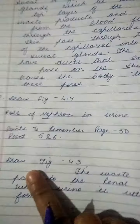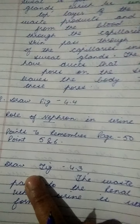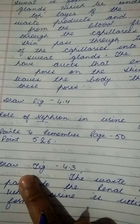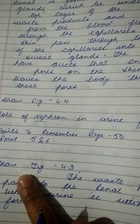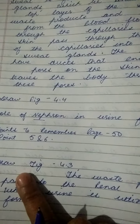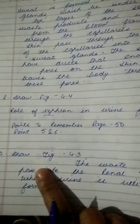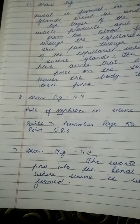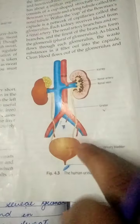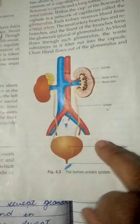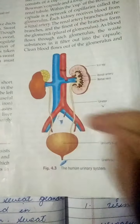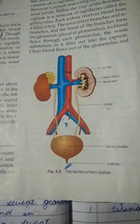Third question is: draw a diagram of the urinary system. Explain how urine passes from the kidney to be expelled from the body. For this you have to draw figure 4.3, along with the labeling. You can color it also.